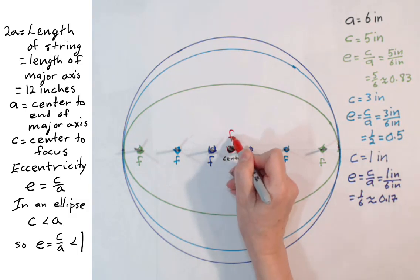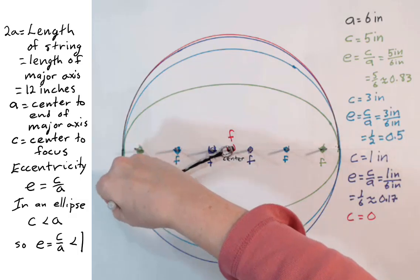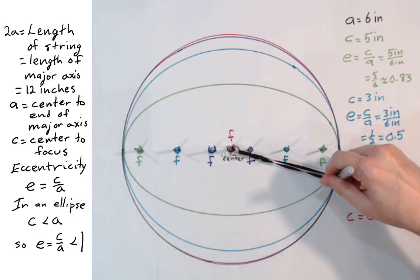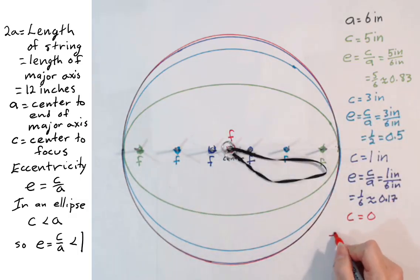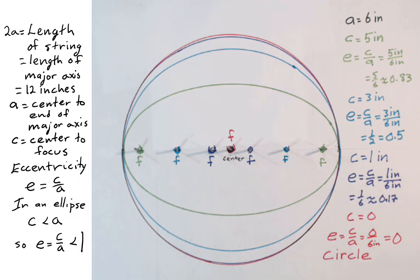Finally, we move the foci all the way to the center, making c equal to 0. This ellipse, of course, is a circle. Eccentricity is c divided by a, so it is 0 over 6 inches, which is 0. An ellipse with an eccentricity of 0 is a circle. An ellipse with an eccentricity close to 0 is close to circular. As the eccentricity gets closer to 1, the ellipse gets narrower and less circular. The eccentricity can't be exactly 1 or greater than 1, because that would put the foci on or outside the ellipse, and then we wouldn't have an ellipse at all.